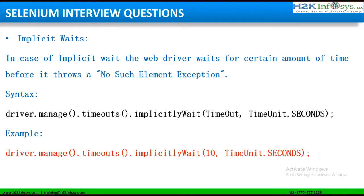Implicit waits in Selenium are simple and straightforward. Whenever an implicit wait is applied in a Selenium test script, the web driver waits for a certain amount of time before it throws a 'no such element found' exception. The syntax is one line and makes use of the implicitly wait method applied over the timeouts method. It takes two parameters: the first is a timeout integer value that determines the total wait time, and the second is a timeunit that determines the unit of time. For example, giving 10 seconds means the tool will wait for 10 seconds before executing the next step.